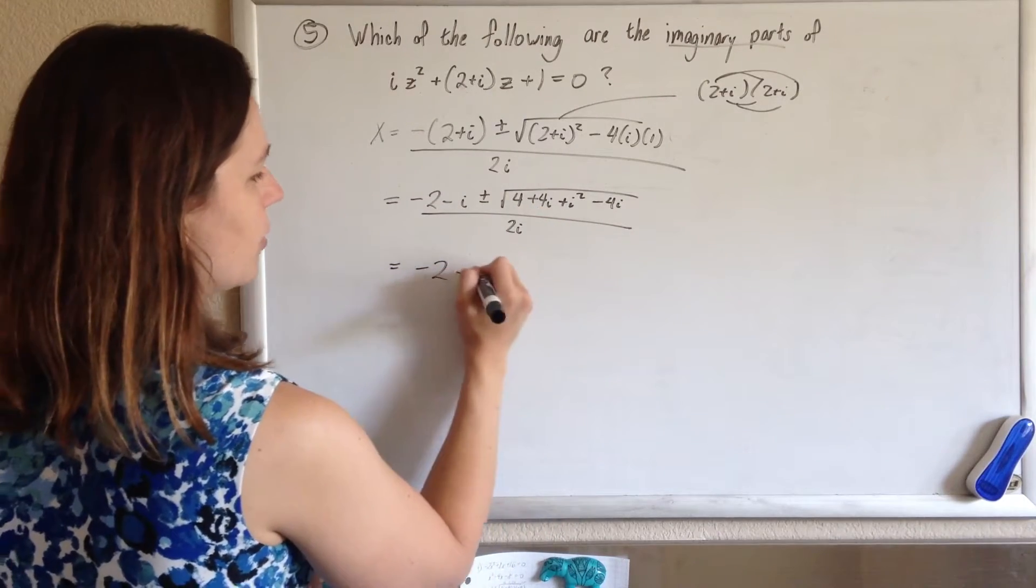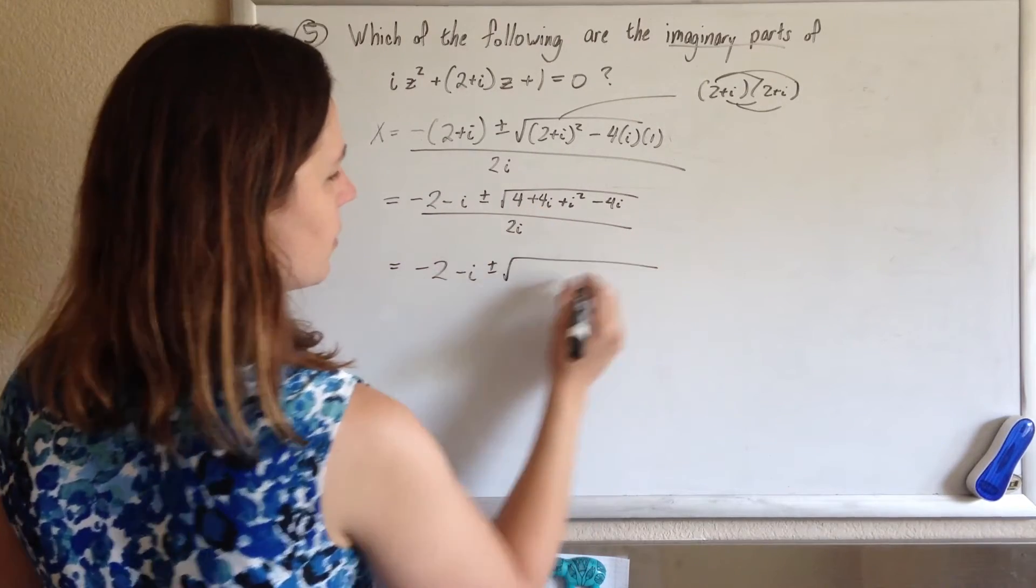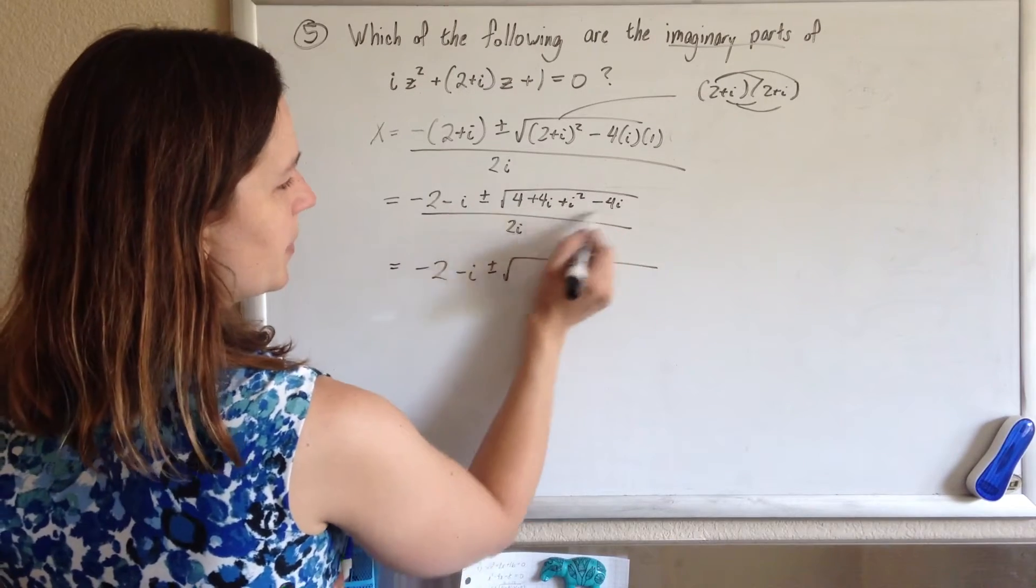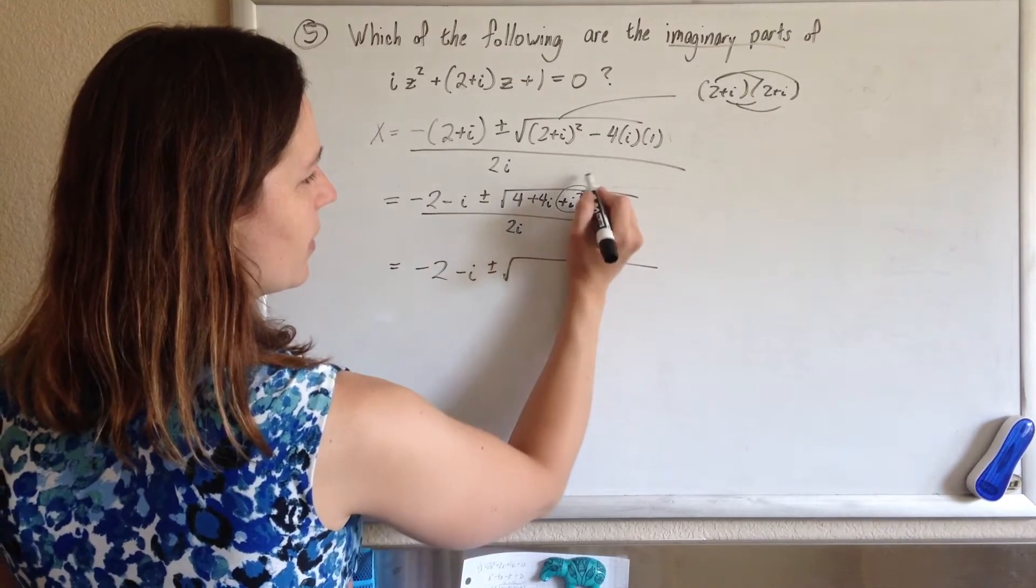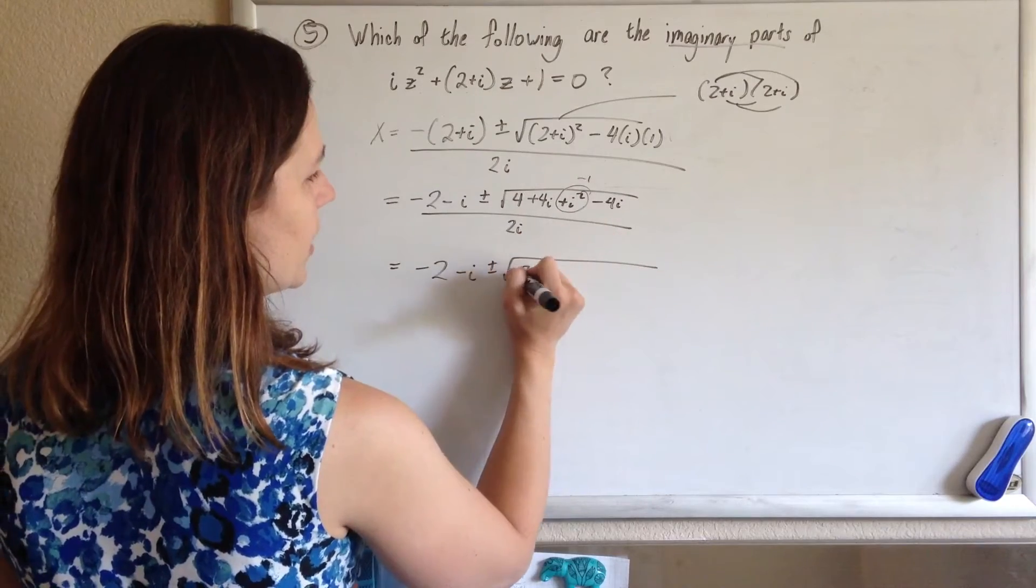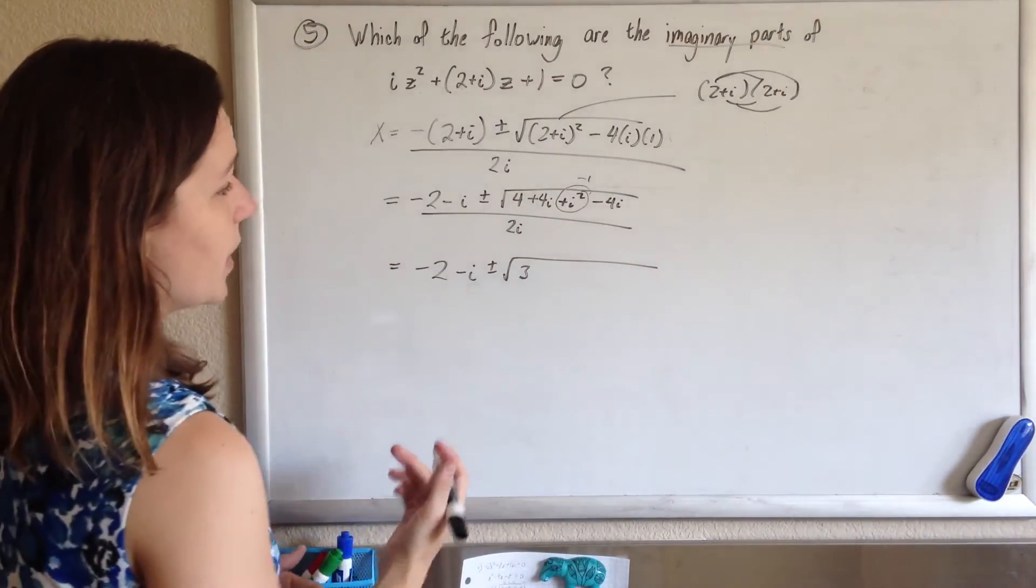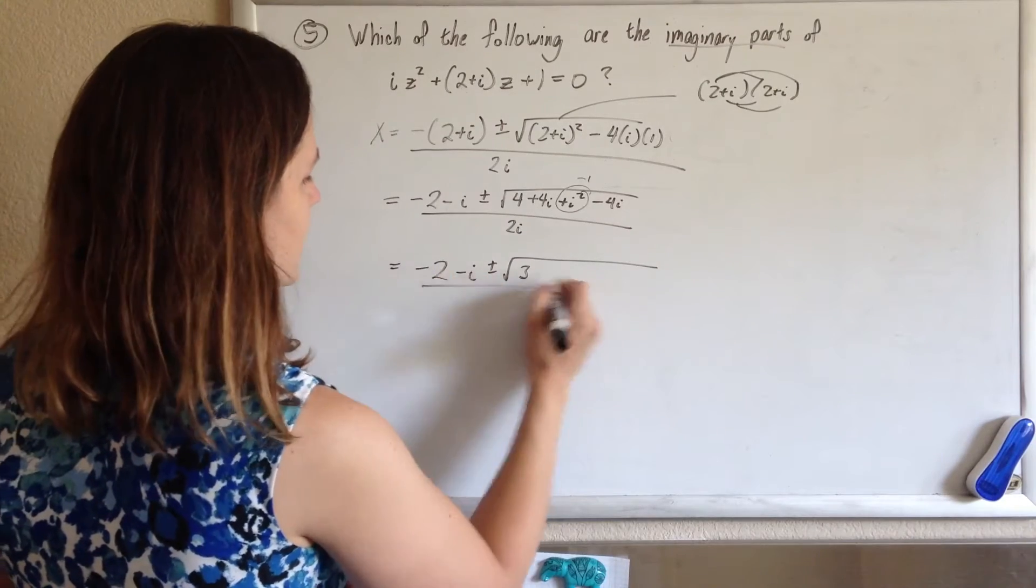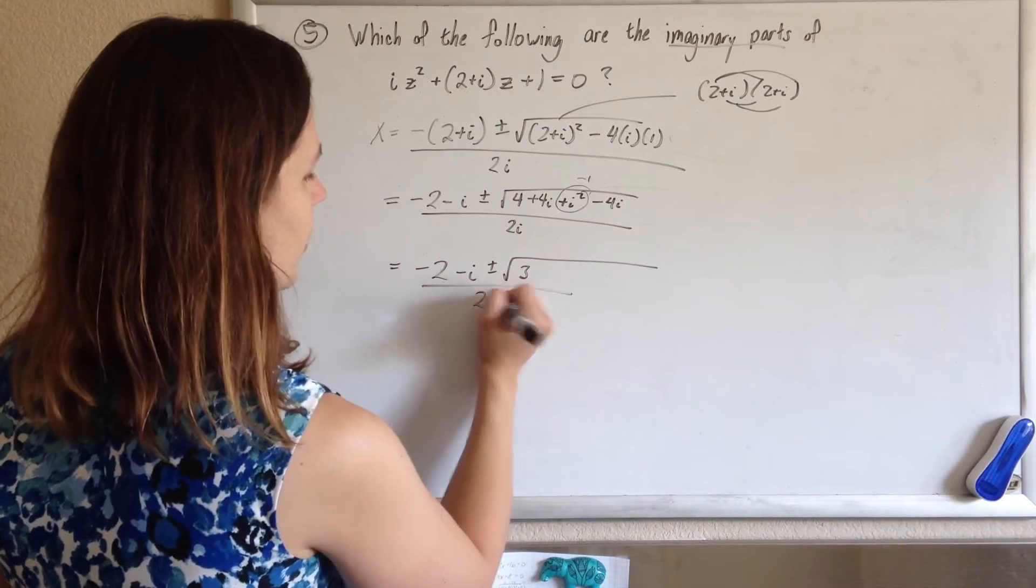And then minus 4i all over 2i, so we get negative 2 minus i plus or minus the square root of, just simplifying this, remember i squared is negative 1, so when I do 4 minus 1, I get 3, and then the 4i minus 4i just goes away. So we have that, and it's all over 2i.